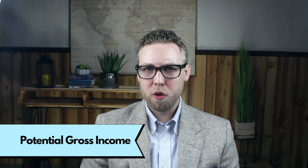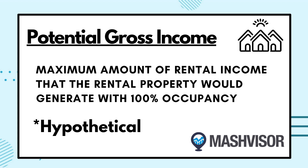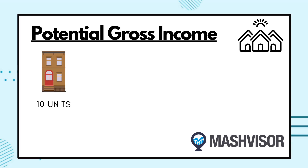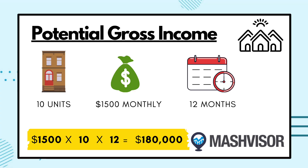Number one: potential gross income. Potential gross income is the maximum amount of rental income that a rental property would generate at its highest rent if it had 100% occupancy during the year. This is hypothetical because it assumes the income property will be rented for the entire year and that tenants will pay the full rental amount as agreed upon in their leases. For example, if you are considering buying an apartment building with 10 units and each would rent for $1,500 per month, your potential gross income is $1,500 times 10 times 12, which equals $180,000. In the real world, this is hardly ever the case.